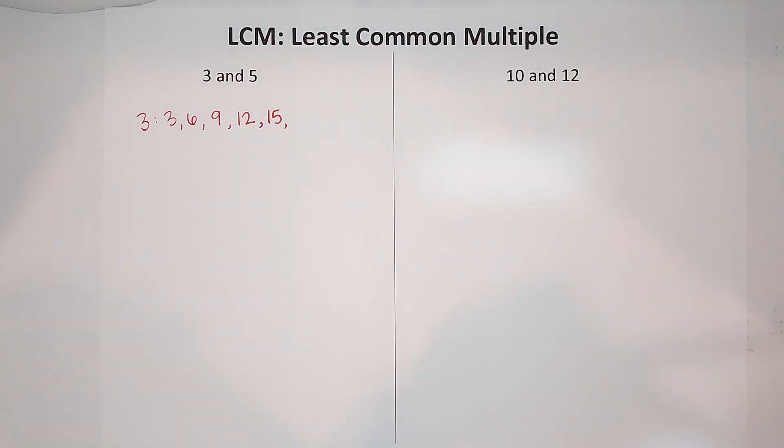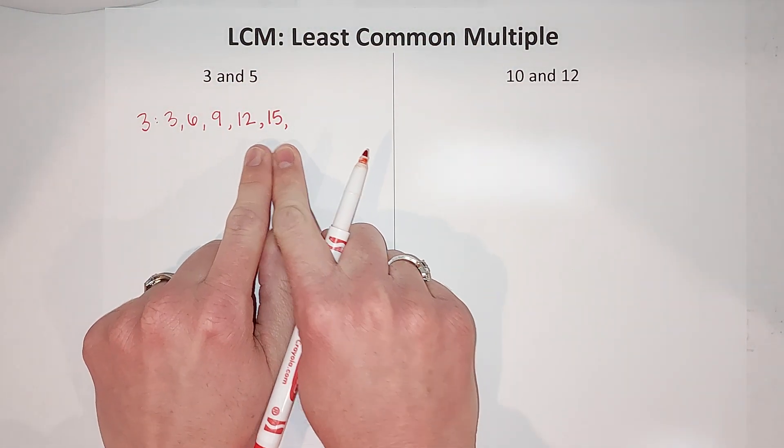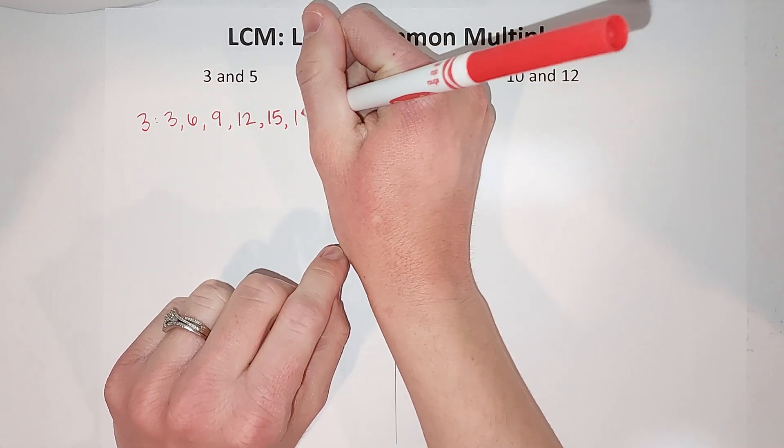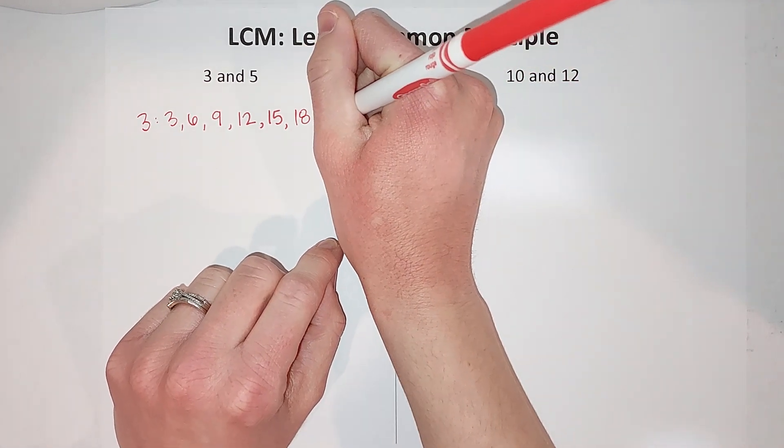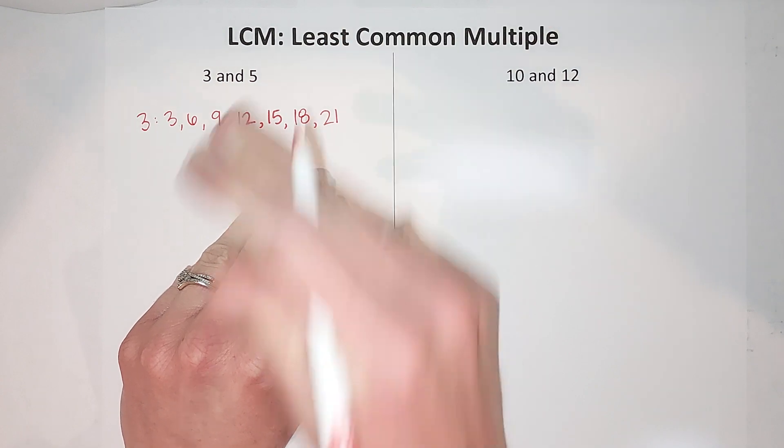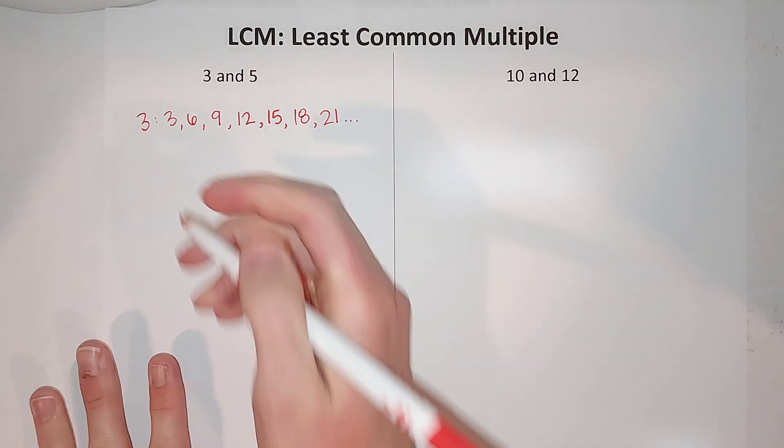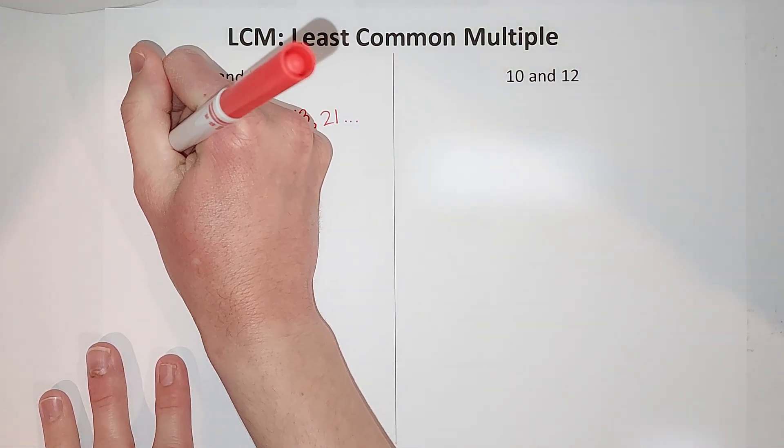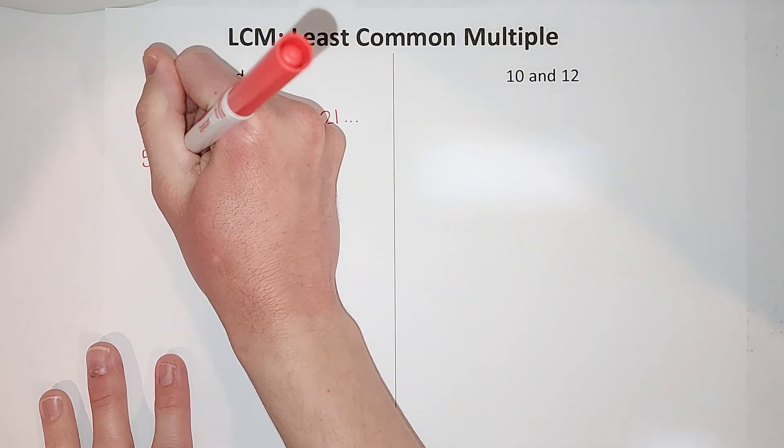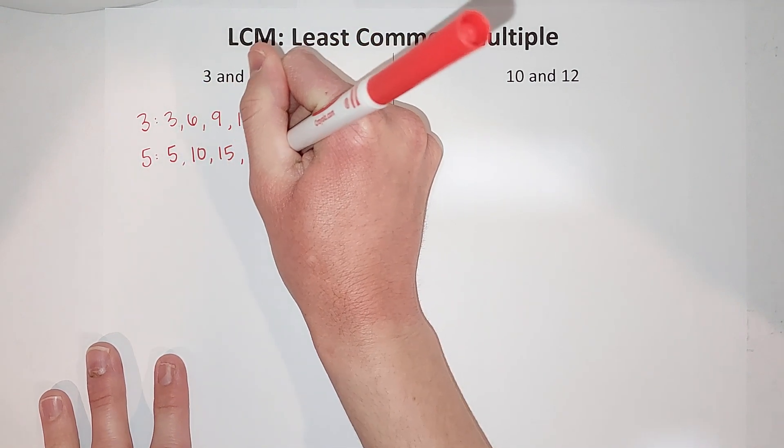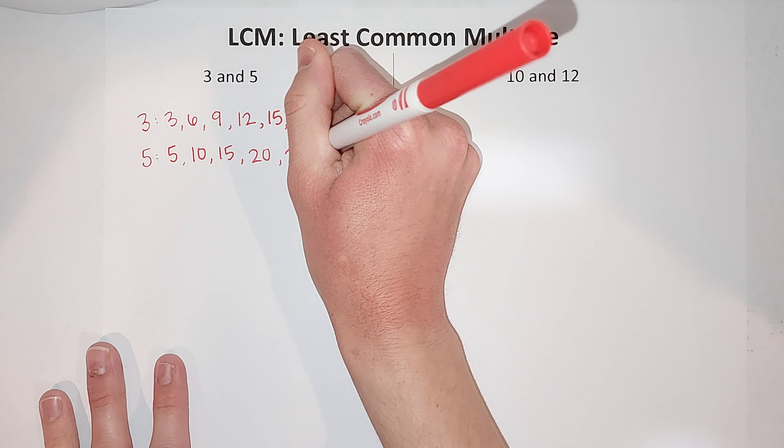So I just added 15 here, 18, 21. I could keep going literally forever. Now multiples of 5, this is awesome: 5, 10, 15, 20. I could keep going 25, it keeps going.